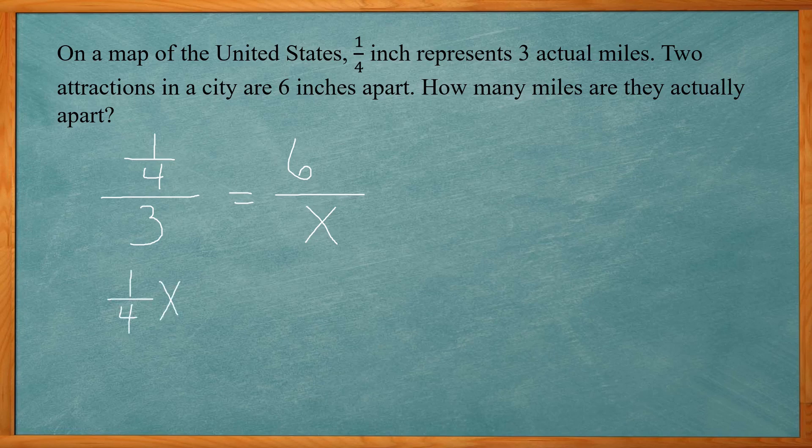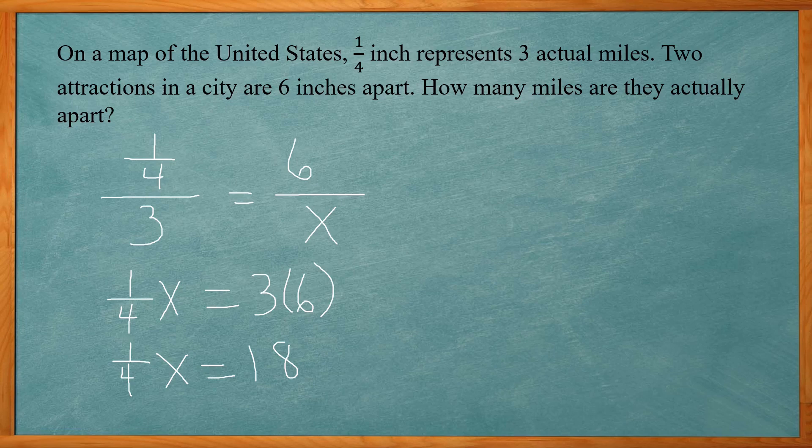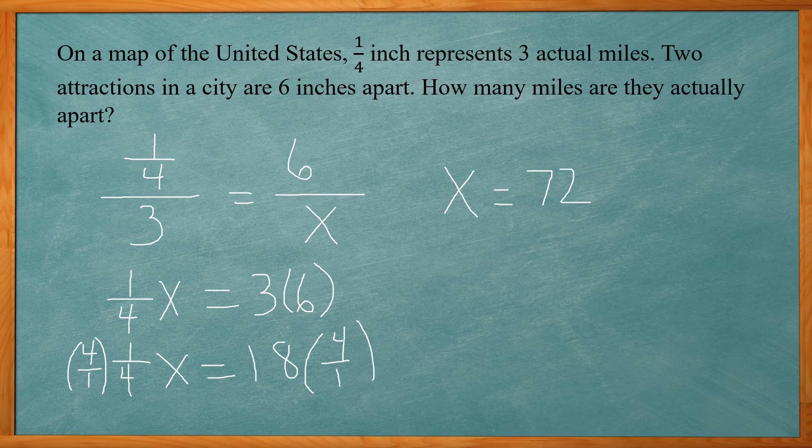1/4 x equals 3 times 6, or 1/4 x equals 18. Now with a fraction we don't need to divide by a fraction. We can multiply by the reciprocal which is 4 over 1. So multiply both sides by 4 over 1 or just 4. That'll give you x equal to 72. Okay so 6 inches on the map will correlate to 72 actual miles.